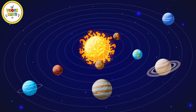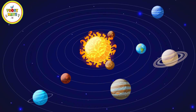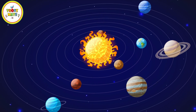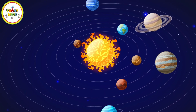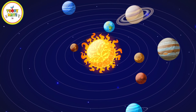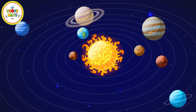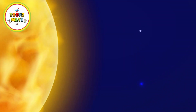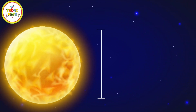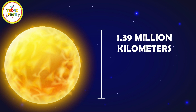The Sun is the star at the center of our solar system. It is a nearly perfect sphere of hot plasma, primarily composed of hydrogen and helium. The Sun's diameter is about 1.39 million kilometers, or 864,000 miles.